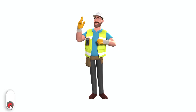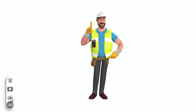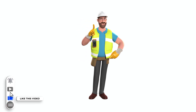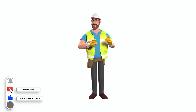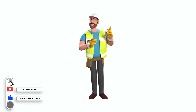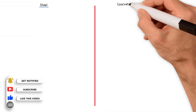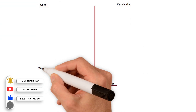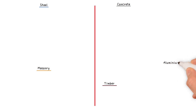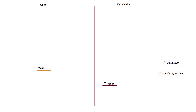Welcome back to the channel. In today's video, we will go through the most commonly used structural materials, which include steel, concrete, timber, masonry, aluminium and fibre composites. This covers the vast majority of materials used in modern structures.